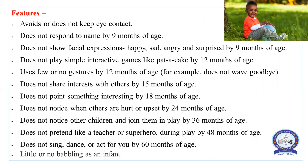There are a wide range of features in autistic children, but a few are commonly noticed at particular ages. An autistic child avoids or does not maintain eye contact. At the age of nine months, the child does not respond to his name and does not show facial expressions like happiness, sadness, anger, or surprise. At the age of one year, the child does not play simple interactive games like pat-a-cake, and uses very few or no gestures, for example to say goodbye. By age 15 months, the child does not share interest while playing with others.